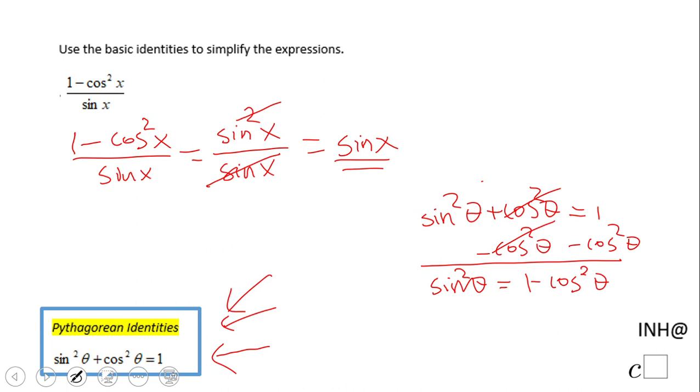Let me emphasize another form of this Pythagorean identity, which is cosine squared equals 1 minus sine squared. Very useful, this one and the first one, to remember.